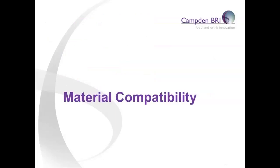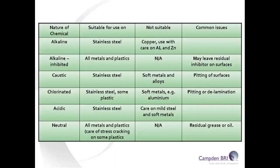Now let's review the compatibility of detergents and the common materials of construction used in our industry. This table gives an overview of the compatibility of the common classes of detergent with commonly encountered materials used to manufacture processing equipment. In general terms, if your plant is constructed of stainless steel then your choice of detergents is more extensive than if you have soft metals or aluminium present. For full detail, please examine the table in Guideline 55.